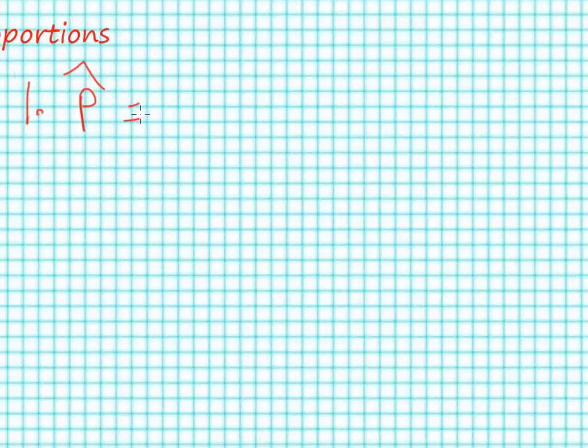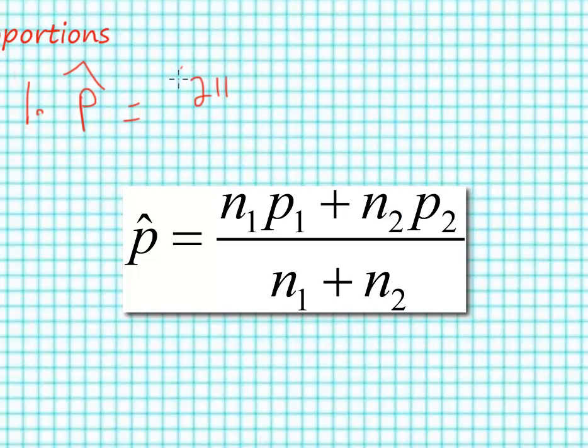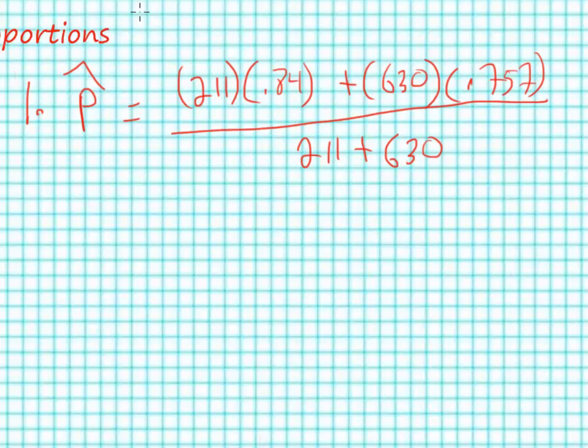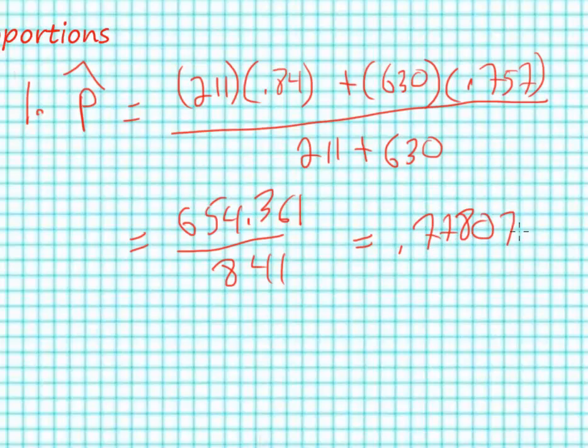Our p hat is going to be equal to 211 times 0.841 plus 630 times 0.757, and we divide all of that by 211 plus 630. That is, we have n1*p1 plus n2*p2 divided by n1 plus n2. Solving this, we get 654.361 divided by 841, which is equal to 0.77807491.